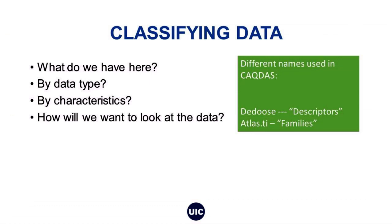The last thing to talk about is classifying data, which is really important because it begins your analytic process. You're trying to identify what do we have here, what kinds of data it is, and by what characteristics you want to look at these data. This is typically done in CAQDAS software. It's called different things in different programs — in DEDOOSE this refers to descriptors, and in Atlas.ti it's the use of families. When you have a lot of data, having a computer assist is really helpful.